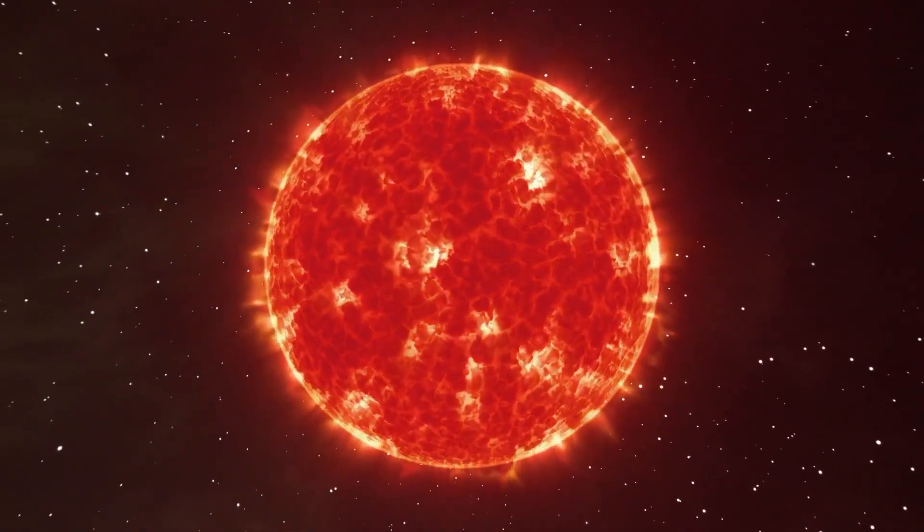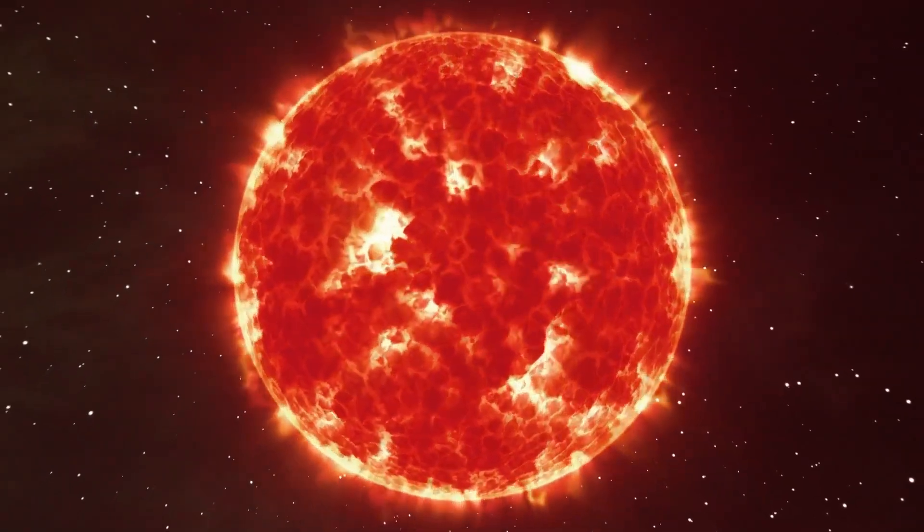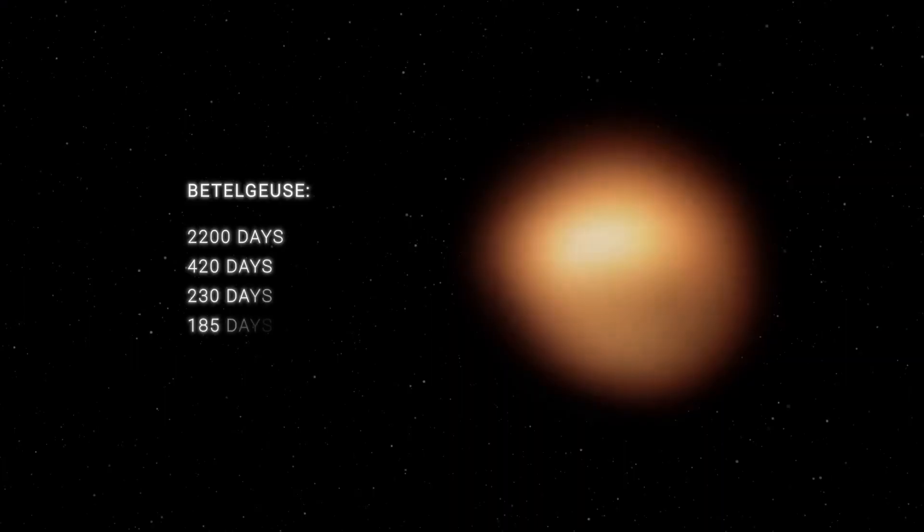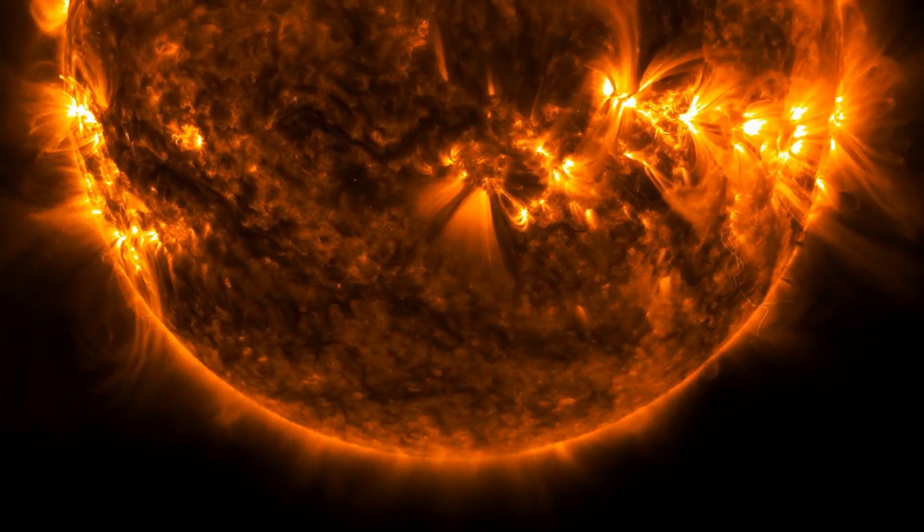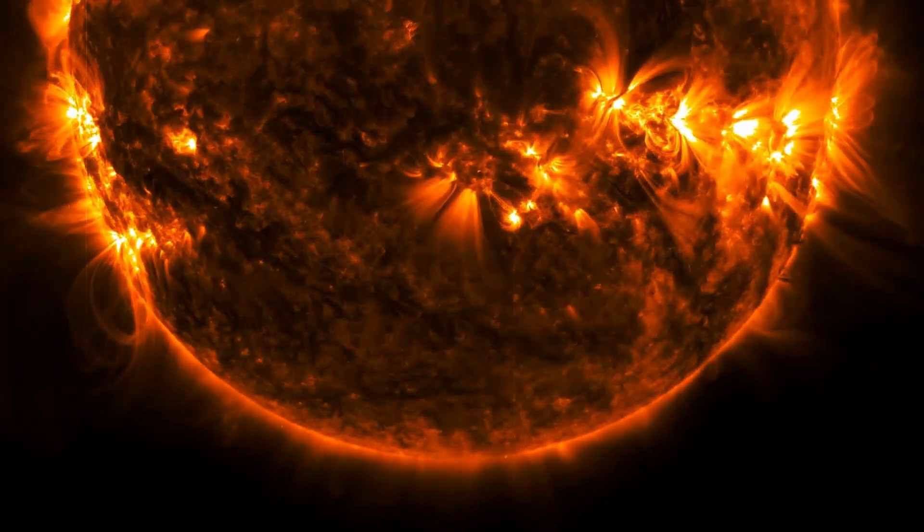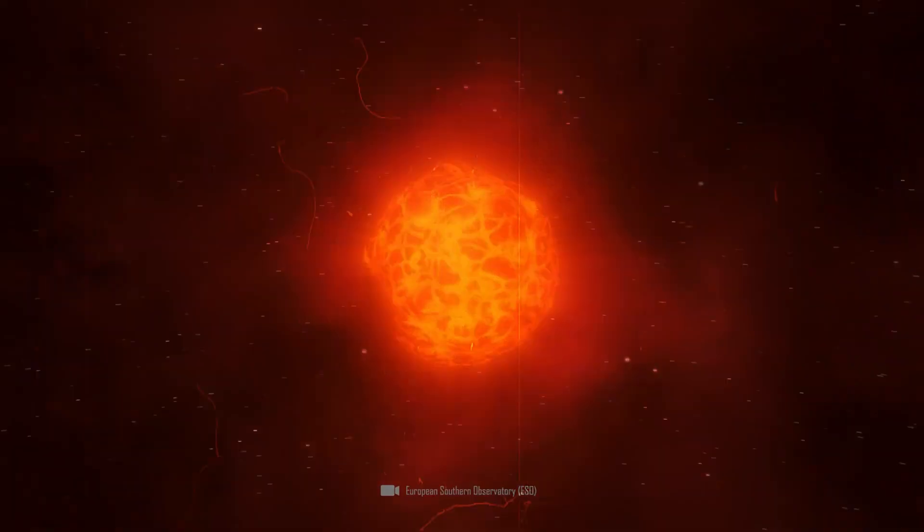About 10 million years ago, Betelgeuse was formed in a dense molecular cloud. This cloud of gas and dust consisted of materials traveling freely in the universe, and it also consisted of the remains of earlier supernovae. Betelgeuse was thus formed from the material of older stars.